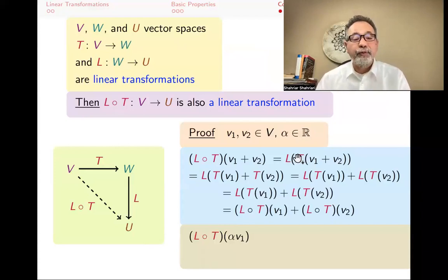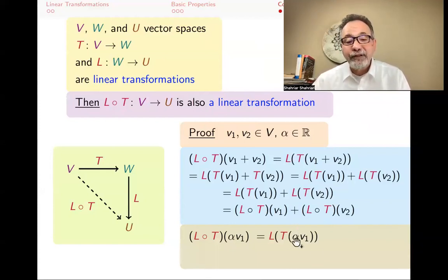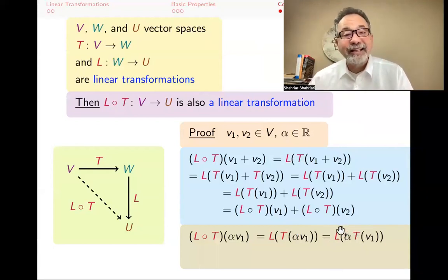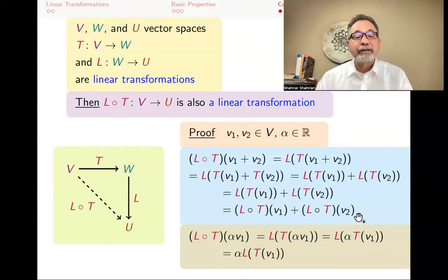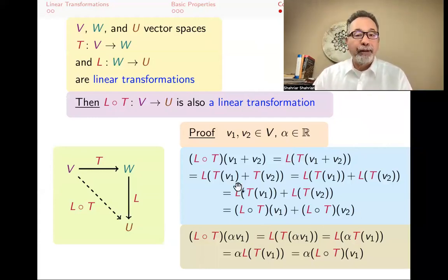We can do the same thing with αV1. What's (L∘T)(αV1)? By the definition of function composition, that's L(T(αV1)). Inside, the α can come out of T: L(α·T(V1)). Then L is a linear transformation, so α comes out again: α·L(T(V1)) = α·(L∘T)(V1). So L∘T has both properties of a linear transformation, and it is indeed a linear transformation.